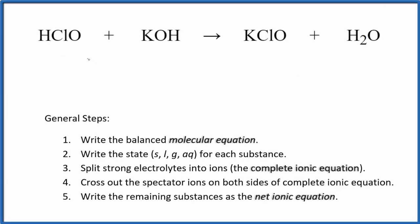In this video, we'll write the balanced net ionic equation for HClO plus KOH. This is hypochlorous acid, and this is potassium hydroxide. So we have an acid and a base, we get a neutralization reaction taking place.